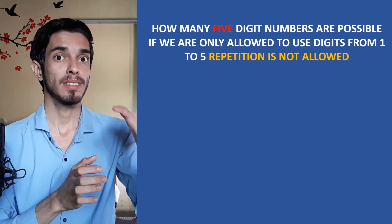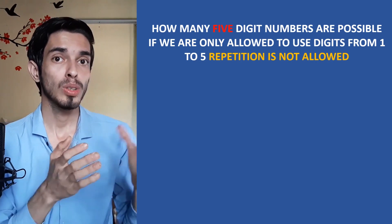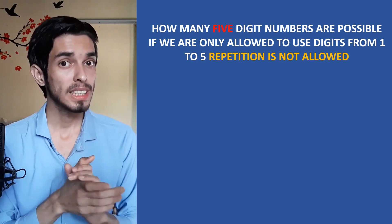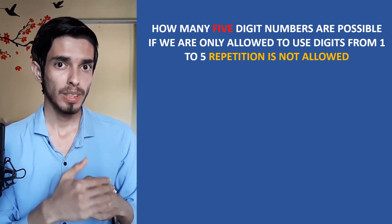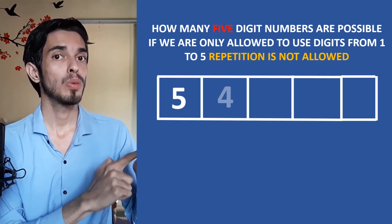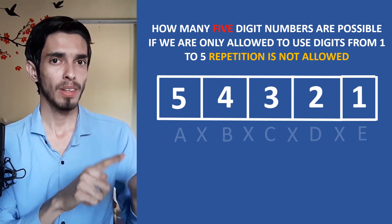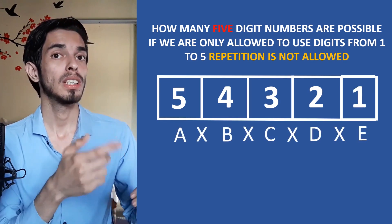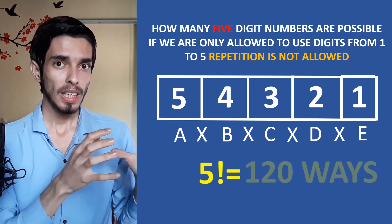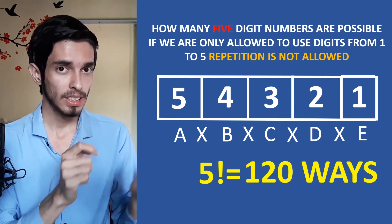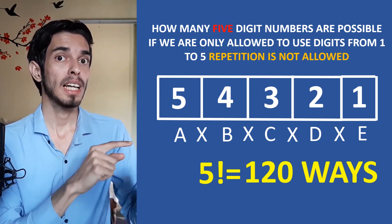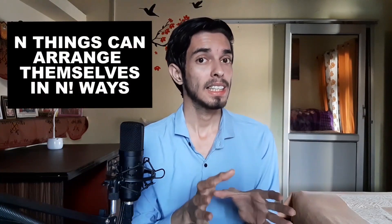Let's modify this slightly to teach another important concept. If you need to construct a five-digit number using only digits one to five with no repetition, the number of ways is five × four × three × two × one, which is known as five factorial. The answer is the number of ways five digits can arrange themselves in five boxes. Remember this key rule: N things can arrange themselves in N factorial ways.